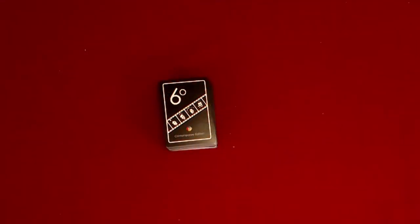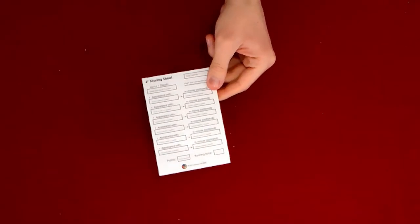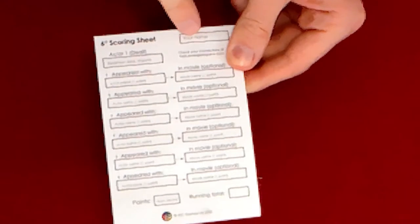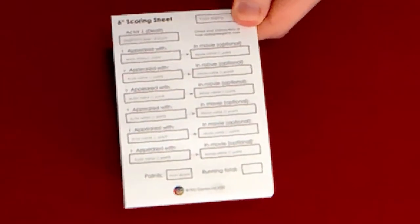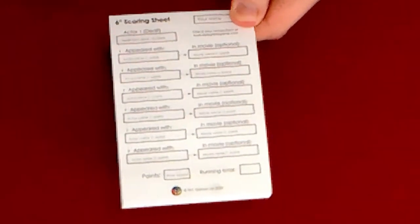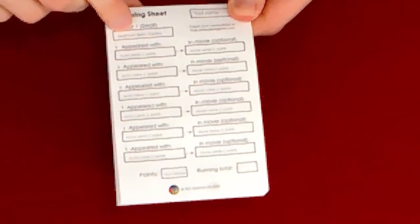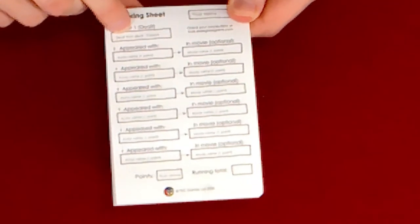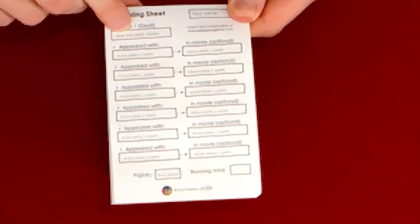Each player uses a new score sheet for each round. Each player should write their name in the top right corner of the score sheet. Each player should write one of the actors on their cards in the Actor 1 box at the top of the scoring sheet. It doesn't matter which one.